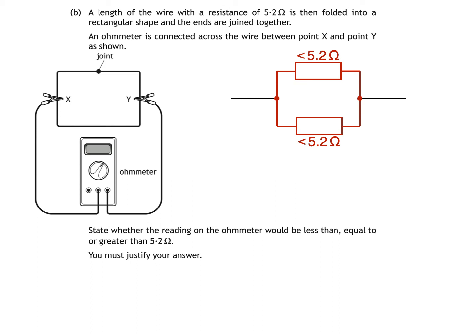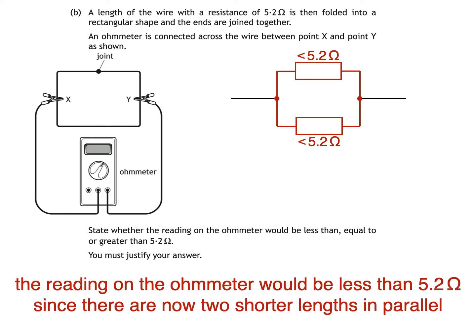This now acts like two resistors each of resistance lower than 5.2 ohms in parallel. When you add resistances in parallel the overall resistance is always lower than the lowest individual resistance. Here's what I would write then. The reading on the ohmmeter would be less than 5.2 ohms since there are now two shorter lengths in parallel.